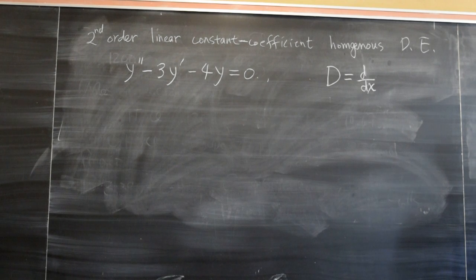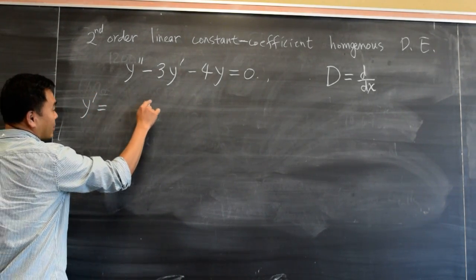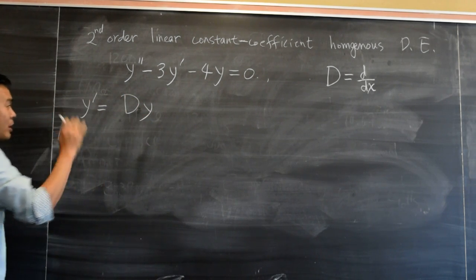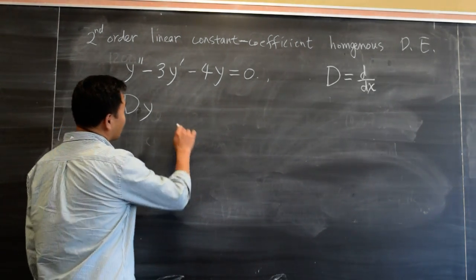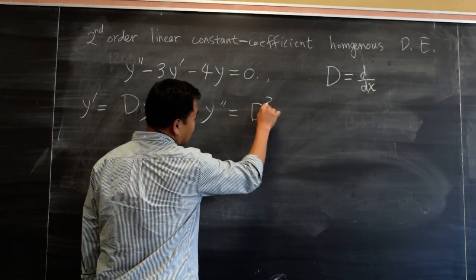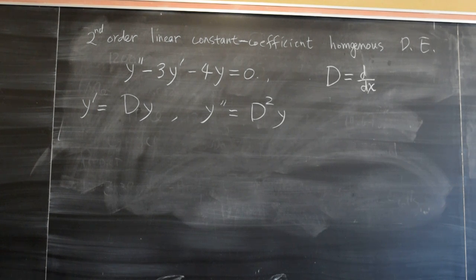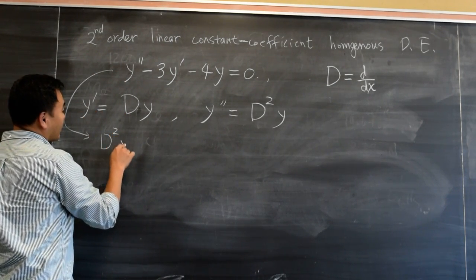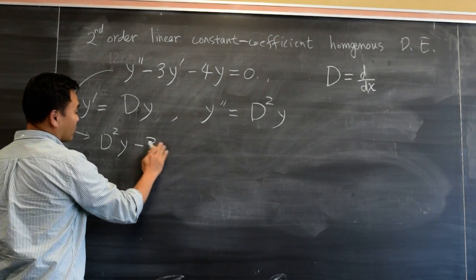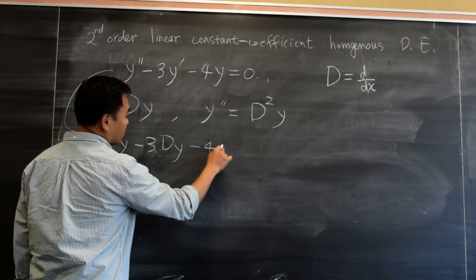So in other words, D is the operator that differentiates a function. So for example, y prime is you take y and you're differentiating y. So instead of y prime you write down Dy. And then instead of y double prime you can write down D squared y because you're taking y and you're differentiating it twice. So you can do that and using that you can rewrite this thing as D squared y minus 3Dy minus 4y equal to 0.